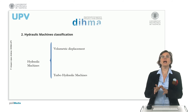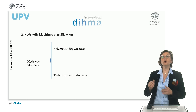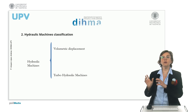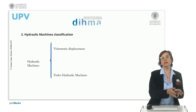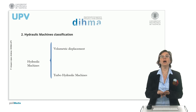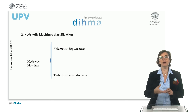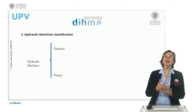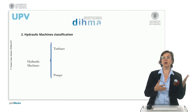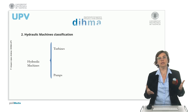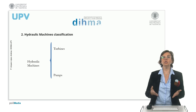Hydraulic machines are either volumetric displacement machines or turbohydraulic machines. Volumetric machines have confined volumes and do not have an impeller. Turbohydraulic machines have an impeller that gives impulse by introducing motion into the system. When energy is transferred from hydraulic to mechanical, we use turbines; when energy is transferred from mechanical to hydraulic, we use pumps.